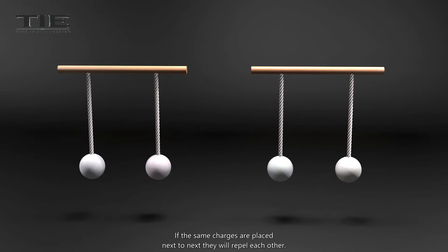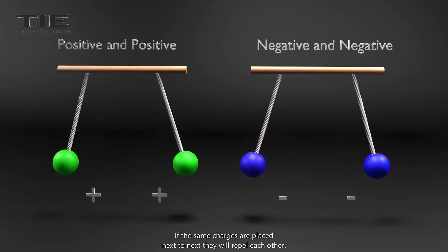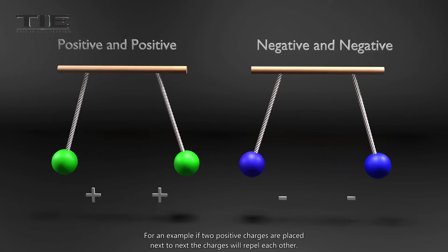If two same charges are placed next to each other, they will repel each other. For example, if two positive charges are placed next to each other, the charges will repel each other. Similarly, if two negative charges are placed next to each other, these two will repel each other.